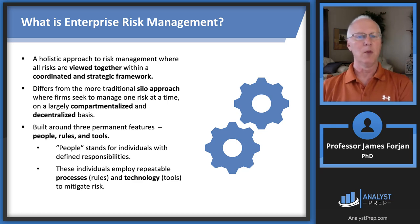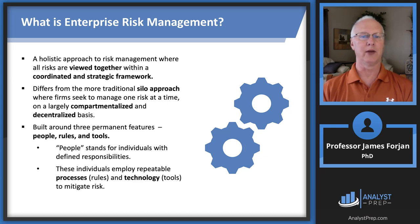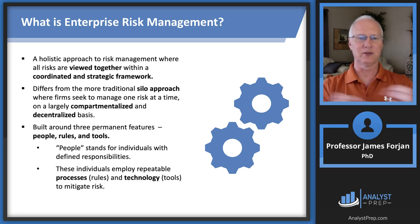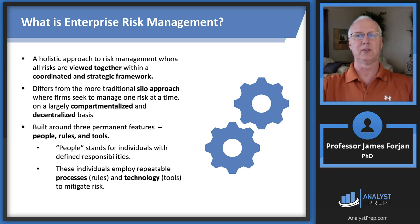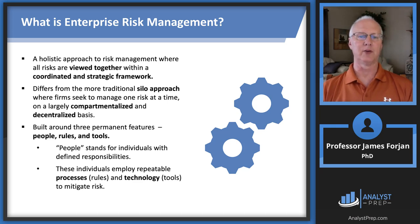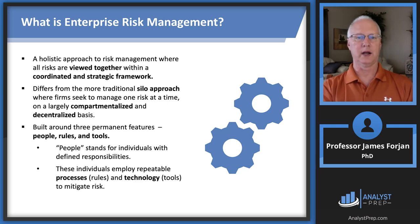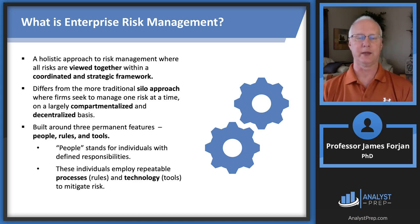We have talked about this before, and we may or may not have called it enterprise risk management. So look at that first bullet point: a holistic approach to risk management. Risks are viewed together and coordinated. The board of directors establishes the strategic plan, so the board needs to be aware of the coordination between and among all those different business silos. The traditional approach had risk management decisions made in a compartmentalized, decentralized framework, but ERM brings this into a central focus.